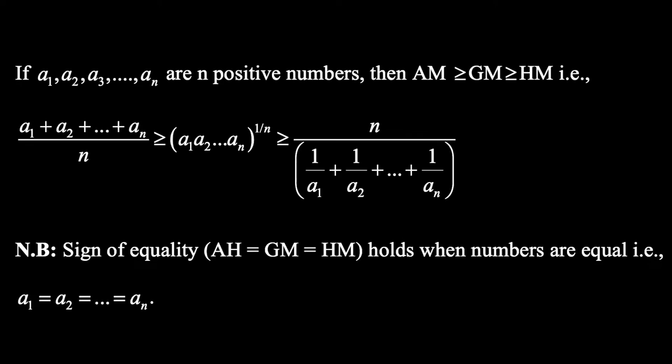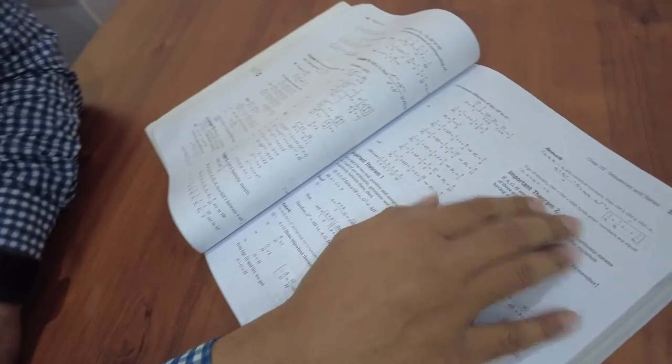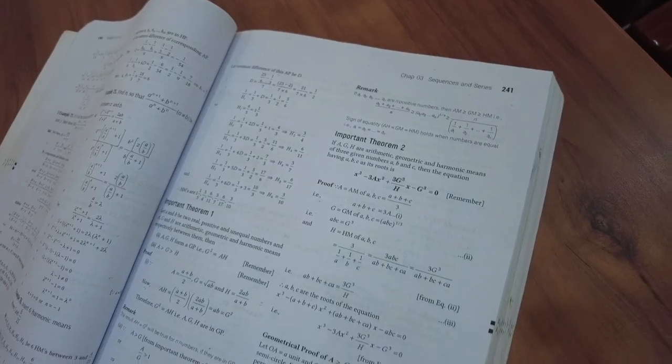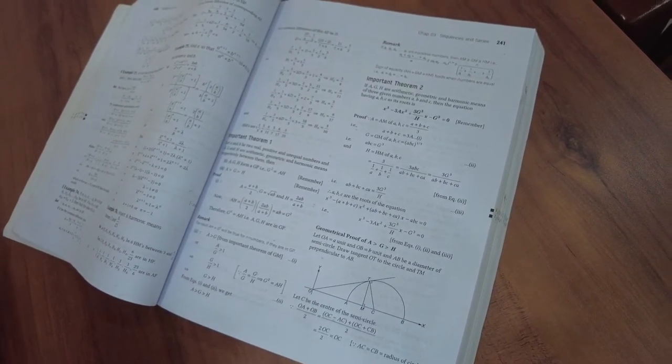This book is supposed to be one of the best books in India for people preparing for the JEE Main and Advanced exams, but I was really disappointed to see that they have not provided a generic proof for the AM-GM-HM inequality. They were not talking about a generic proof; they only proved it for just two numbers. But I'm sure you are here to find the generic proof for this concept.